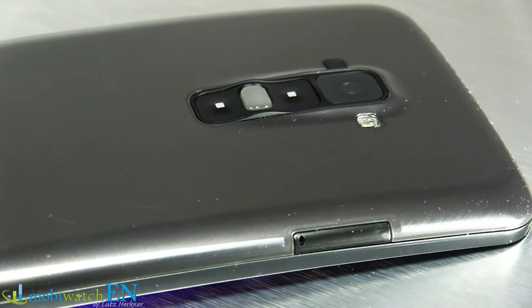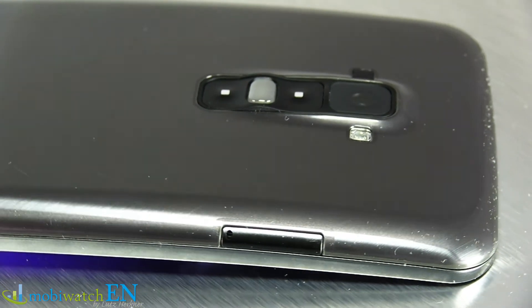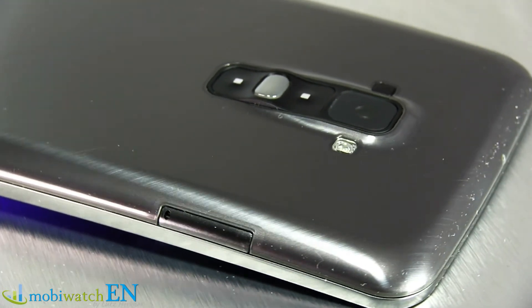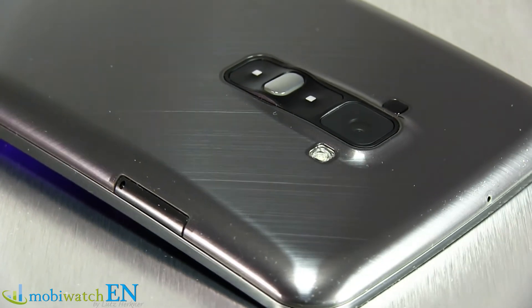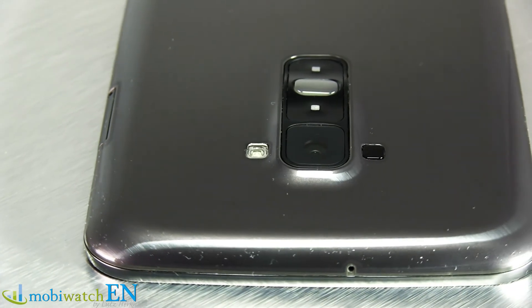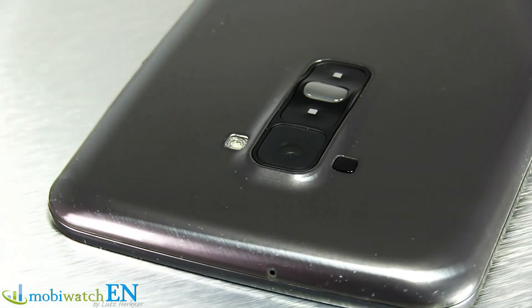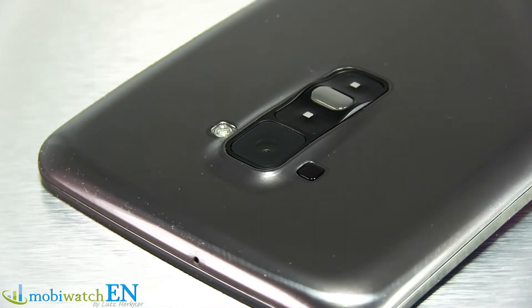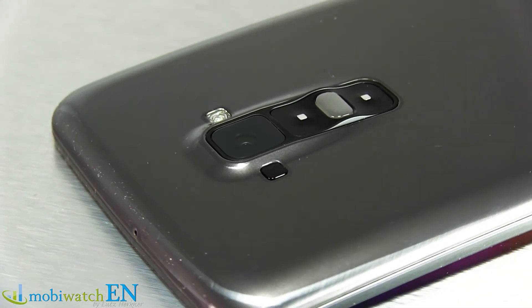In addition we can state that devices with a metal back like the HTC One for example still have the advantage. Even if they can't heal themselves they are more robust than plastic surfaces like that of the G Flex whose self-healing capabilities are very poor in real life.